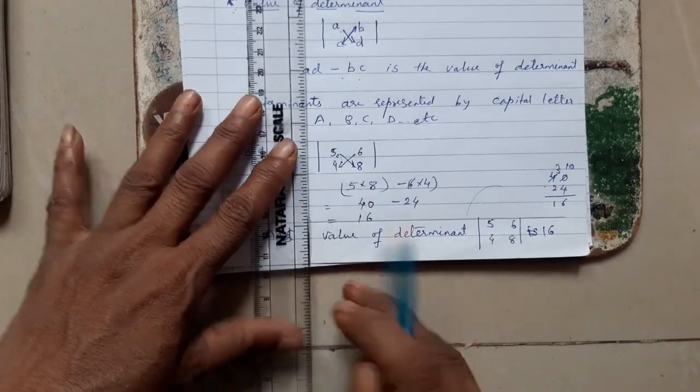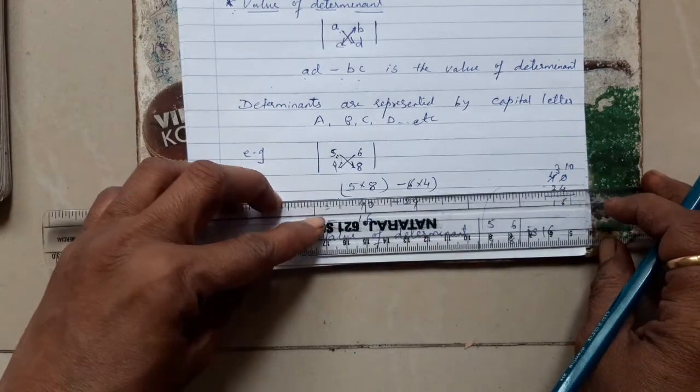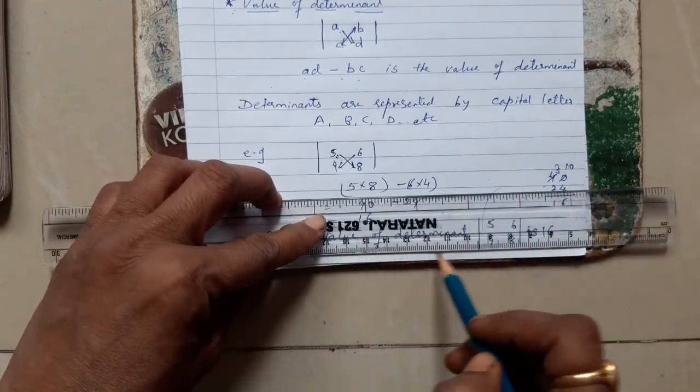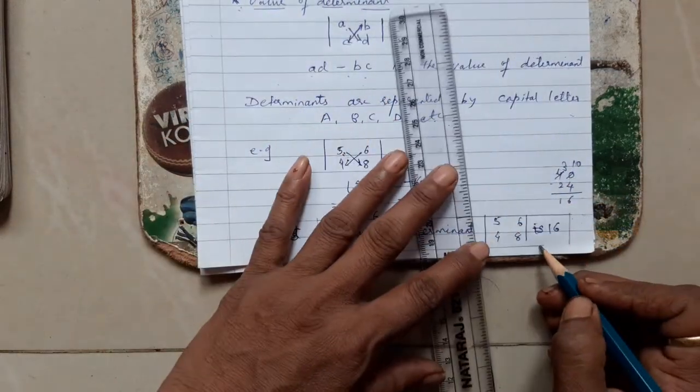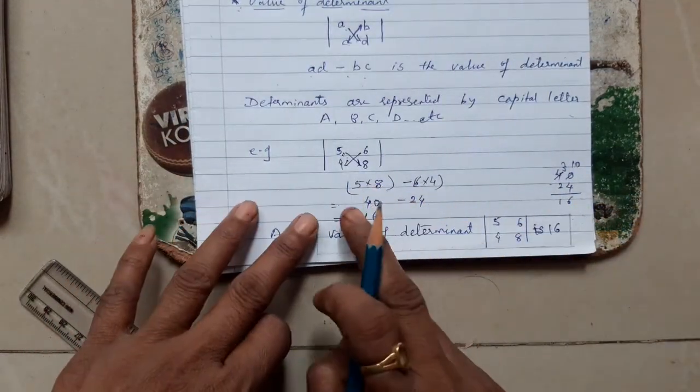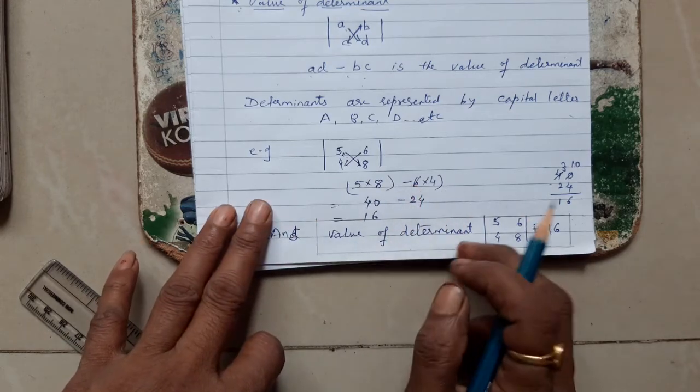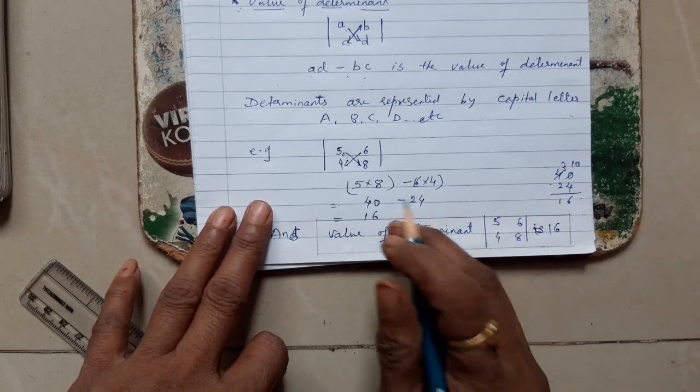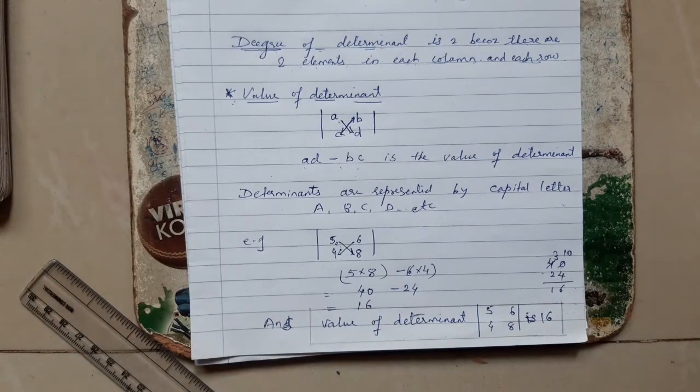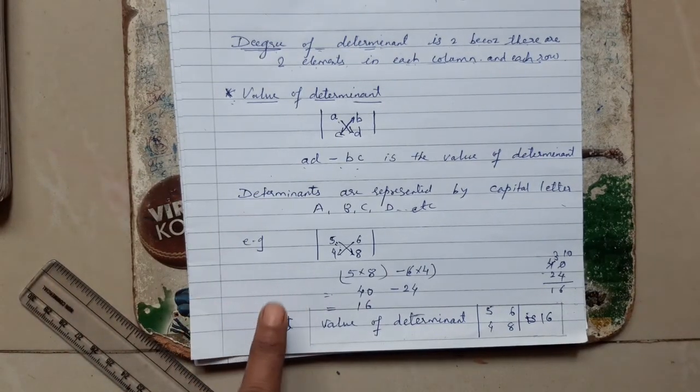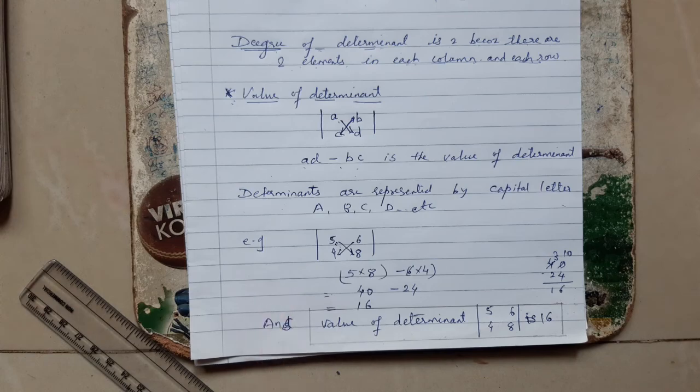You are getting half mark for the work and half mark for your answer. So these sums are for one mark to find out the value of the determinant. Now we will do two or three more examples.